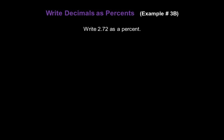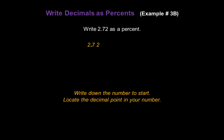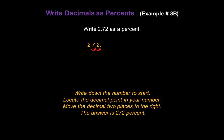Now let's write two point seven two as a percent. Start by writing down the number: two point seven two. Locate the decimal — it's between the first two and the seven. Move the decimal two places to the right. And there's our answer: two hundred seventy-two percent.